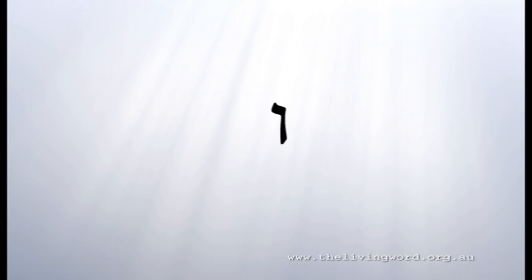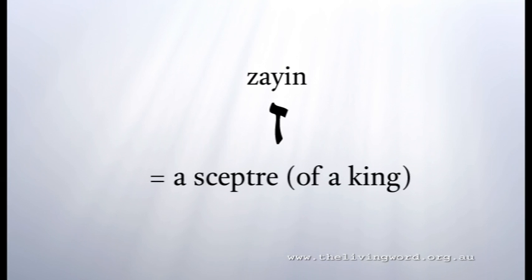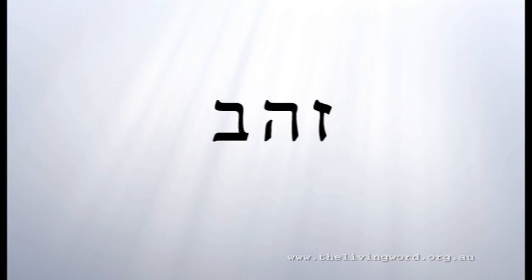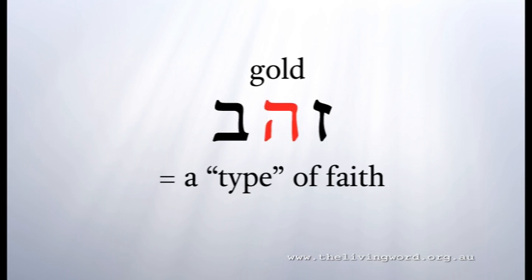The next letter is Vav, the sixth letter of the Hebrew alphabet, and the pictogram is a nail. The nail is indicative of the character of this letter — it is a connecting word. The seventh letter is Zayn, whose pictogram is a scepter — the scepter of a king, a symbol of authority, a small baton or staff held in the hand. The word Zahav — Zayn, He, Bet — means gold in Hebrew. Gold is a type of faith: the spirit of the king over the household of God is trust, faith.